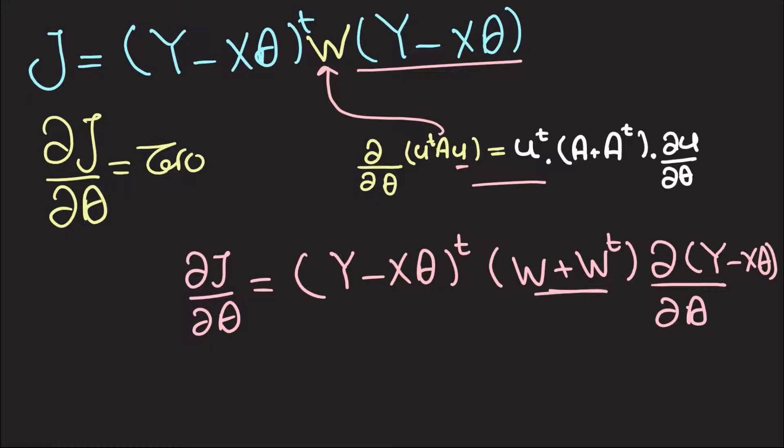Now, first, this is going to give us 2w, because w is a diagonal matrix, and here when we differentiate y with respect to theta, we get 0, and then when we differentiate negative x theta with respect to theta, we get negative x.